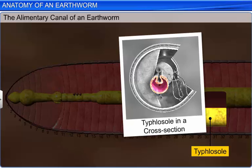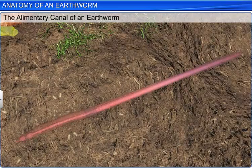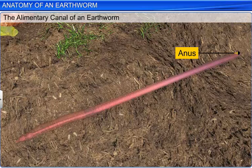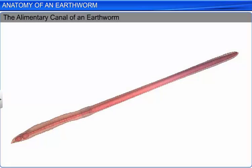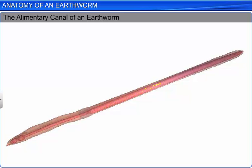Finally, in the last segment, the alimentary canal opens to the exterior through a small aperture called the anus. As the ingested matter passes through the alimentary canal, it is broken down into simpler absorbable molecules by digestive enzymes. These molecules are then absorbed through intestinal membranes and are utilized by the earthworm.